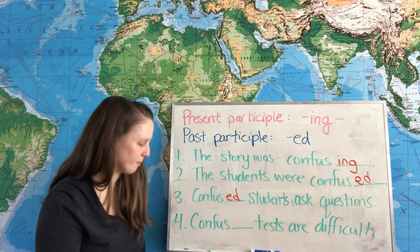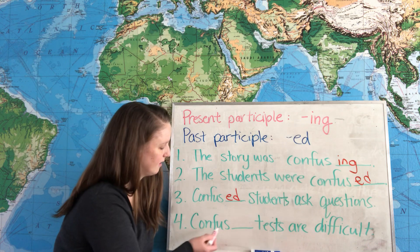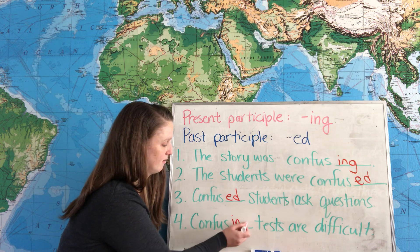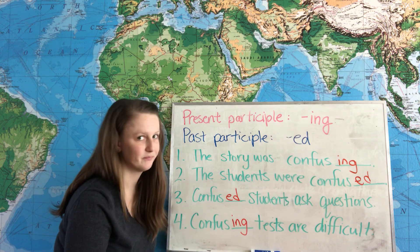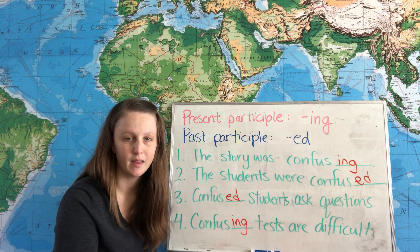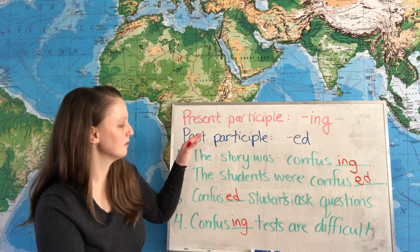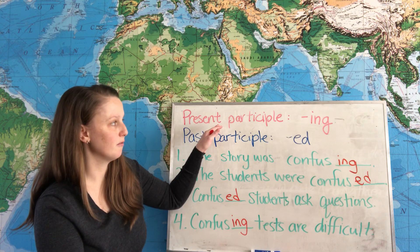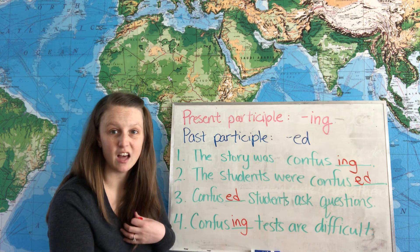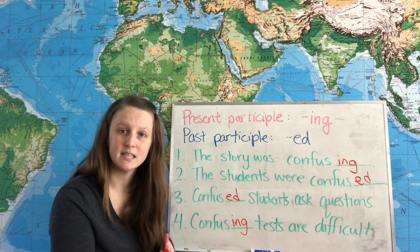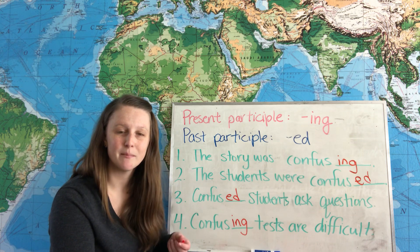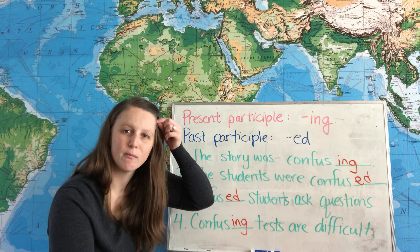Our last example is about tests. The adjective is describing the tests, so we say: 'Confusing tests are difficult.' The tests are confusing and they cause the students to feel confused. So remember — use the present participle for causing a feeling and the past participle for the feeling itself. Try writing some example sentences with bored and boring, or interested and interesting, to really solidify that rule in your mind.